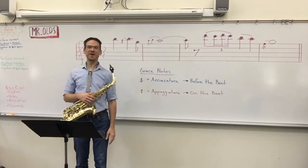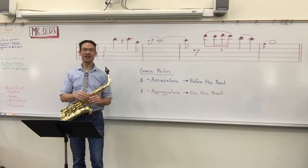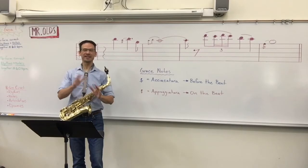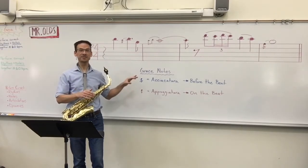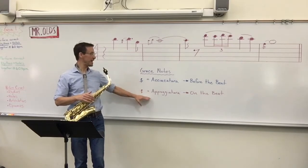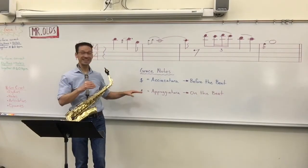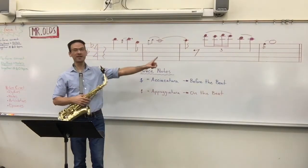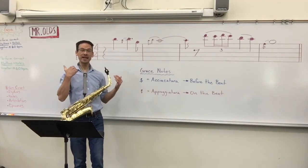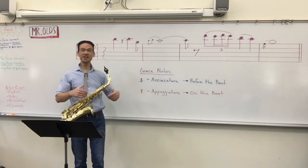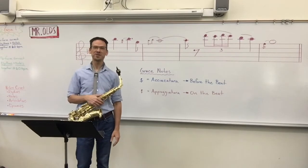A former student of mine told me that they're playing a piece called Carrickfergus in their band, and I checked it out online — it's a beautiful piece. It has a flute solo in it, as well as a couple of other solos, and the flute part has six measures of acciaccatura and appoggiatura. So this is a prime example of applying these in our music. Up on the board here, I have an excerpt from that — it's measure 31. I'm going to take these out of context, and then put them into context, so that you can hear the difference between them and apply them to your music.